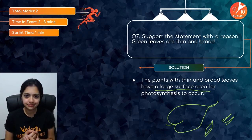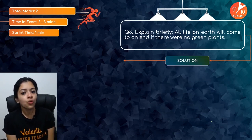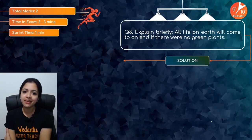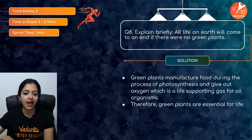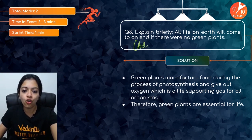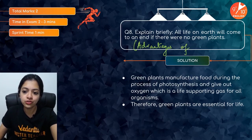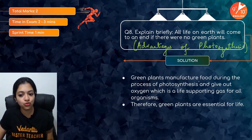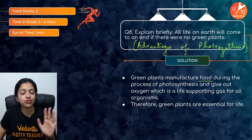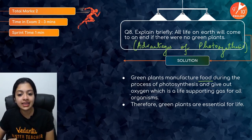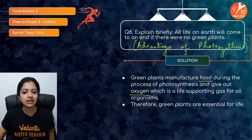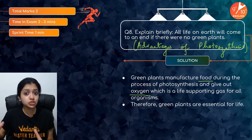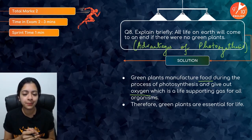Question eight: All life on earth will come to an end if there were no green plants. This is asking about the advantages of photosynthesis. Green plants manufacture food which supports all life on the planet. Apart from this, they give out oxygen, which is a life-sustaining gas for all aerobically respiring organisms. This is why green plants are very crucial and important to have on our planet Earth.